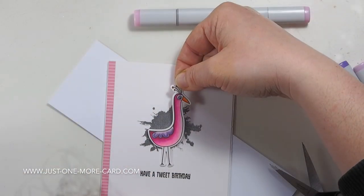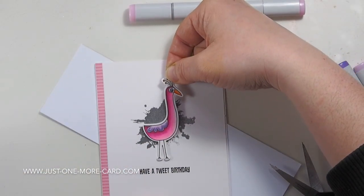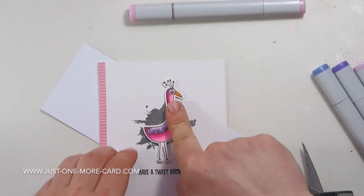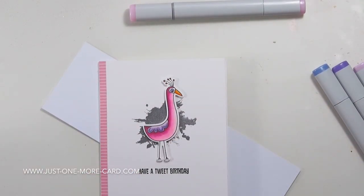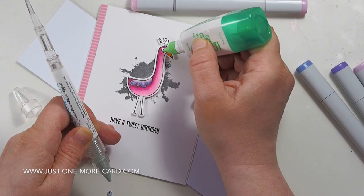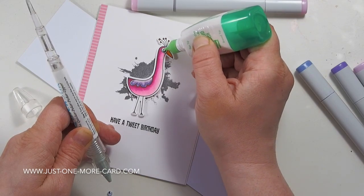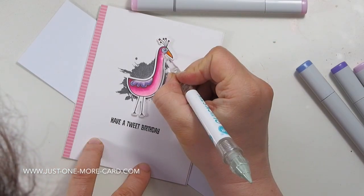Then I put some foam tape on the back of this bird, and I'm placing it right on top of that ink splotch. You can see just how quick and easy you can create a birthday card. For some interaction, I actually added a googly eye here. You can't really see it, but I swear I did.